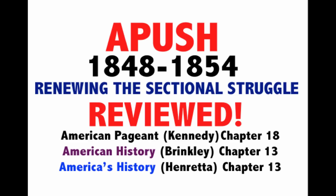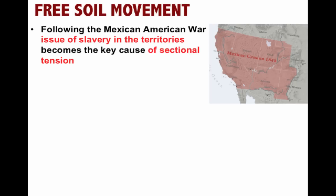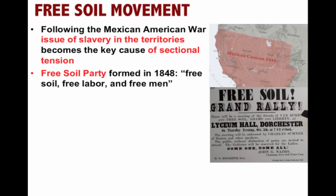Following the Mexican-American War, there's a free soil movement developing in the United States. The issue of slavery in the territories becomes the key cause of sectional tension. We get all this land following the Treaty of Guadalupe Hidalgo, and Americans who join the Free Soil Party, which was formed in 1848, say there should be no slavery allowed in that area. Their slogan is free soil, free labor, and free men. They are opposed to slavery in new land out in the West.